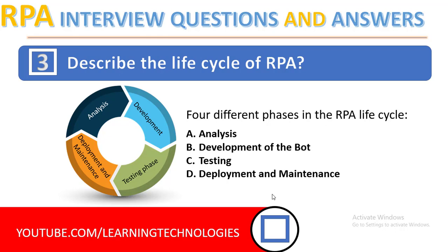In the testing phase, the development team performs quality checks for the bots. In the fourth phase, deployment and maintenance, after development and testing, a bot enters the maintenance phase in which it provides continuous support and helps in immediate defect resolution. These are all the four phases of the RPA life cycle.